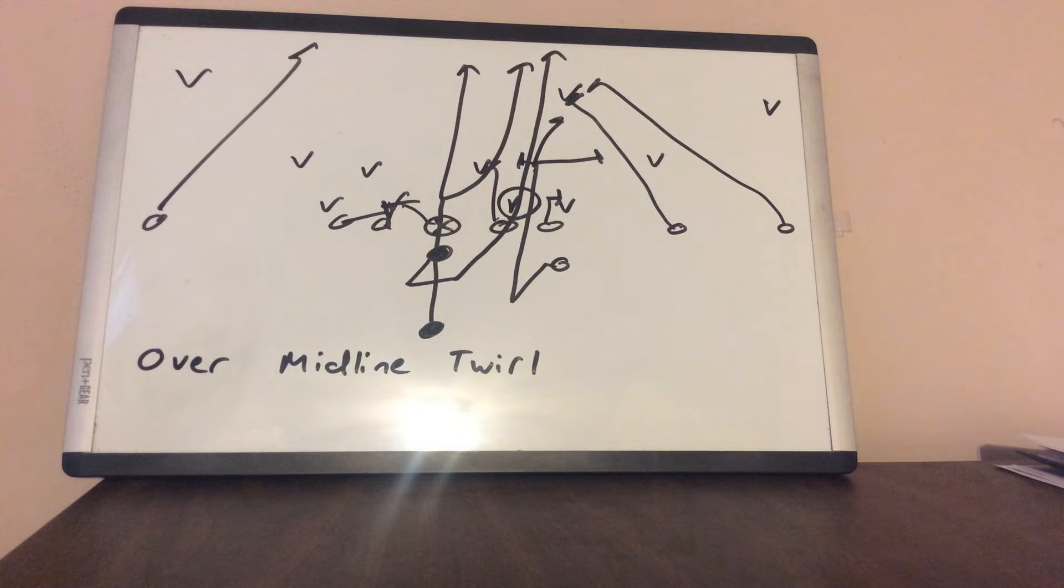So you want to use over-midline twirl if they give you a single high safety because what happens then is it's going to pull him out of the way and could cause big trouble for the defense.